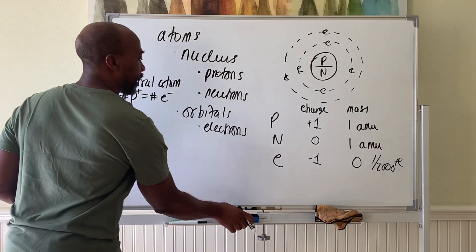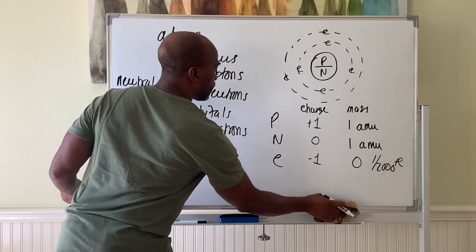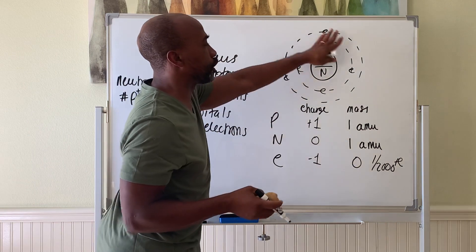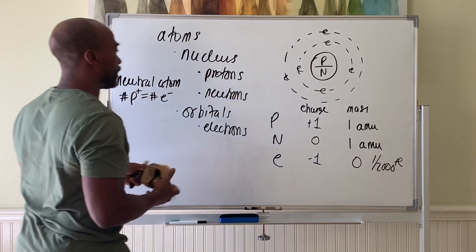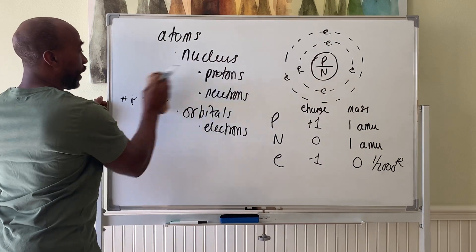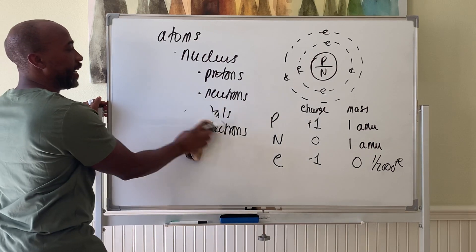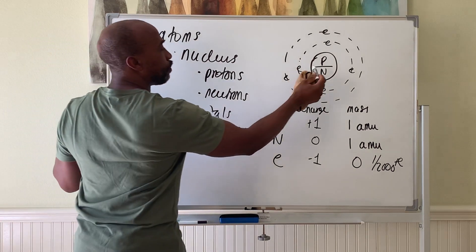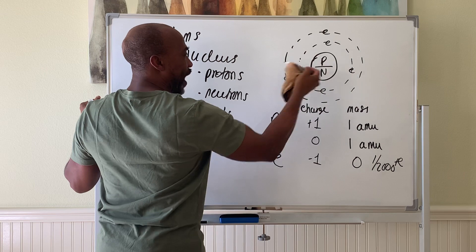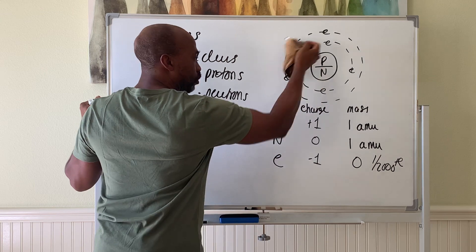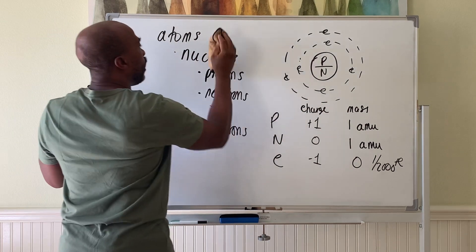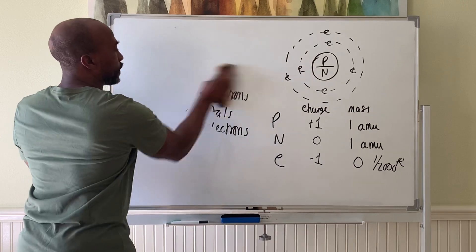Now let's look at how electrons distribute around the nucleus. They're held in place because of the attraction between the positively charged protons, which attract the electrons and keep them in the vicinity of the nucleus.